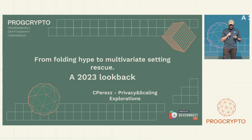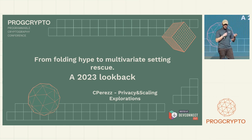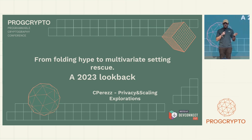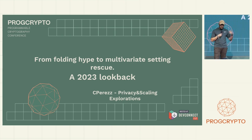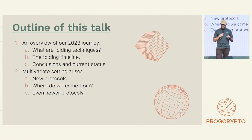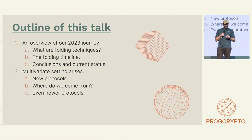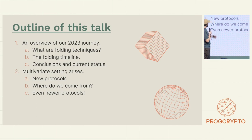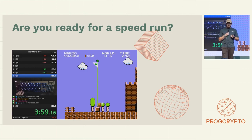Let's jump into something kind of different. I want to guide you through all of the things that have happened this year on the folding landscape, because I know a lot of people who basically stopped syncing with it after three, four, five, six, seven papers came out within like three or four months. The goal of this talk is to go through about 40-something slides in a speedrun-like mode in less than 15 minutes — I have a bet with some colleagues in PSE that I definitely need to win. First, we go through folding. Second, multivariate. Third, conclusions. Ready for the speedrun.